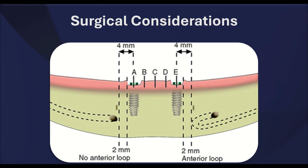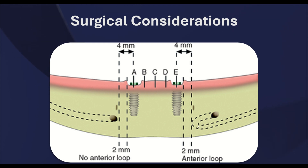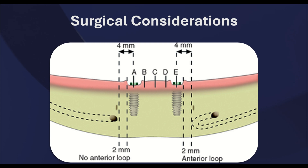Regarding surgical procedures, the length of the anterior loop varies, usually ranging from 0.5mm to 10mm depending on the case, and in some cases it can be even longer. To avoid nerve damage during implant placement, a minimum safety margin of 2mm anterior to the mental loop is recommended.